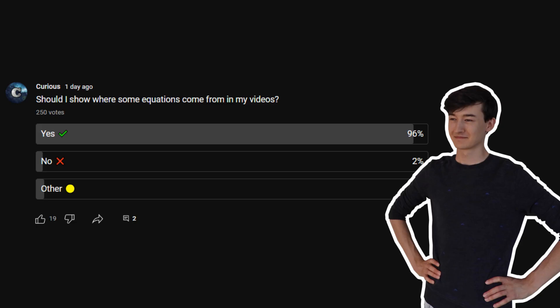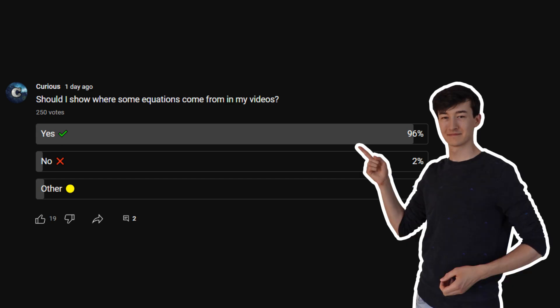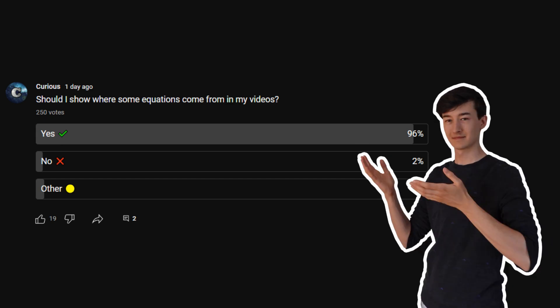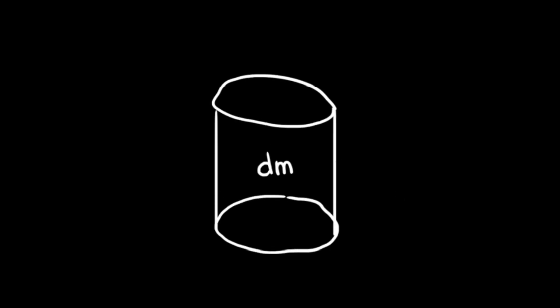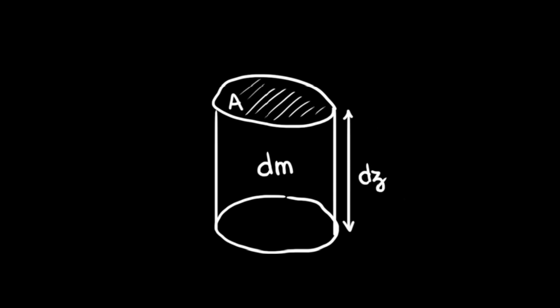Don't you dare leave this video now — you voted that I should delve more into the math, and so that is what I will do. So imagine you have a cylinder. This cylinder is a tiny piece of atmosphere with a tiny mass dm, a height dz, and a base area of A. All the forces applied to this cylinder are either pushing up or pushing down. The atmosphere is made out of a bunch of these tiny cylinders, and what applies to this cylinder must then apply to all.